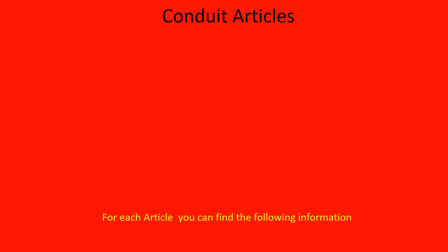For each one of these articles, you can find the following information. If that relevant article has a dot two section, it's going to be the definition of that type of conduit or raceway. If it has a dot 10 section, it's going to have the uses permitted — where can you install this conduit and what can you do with it. If it has a dot 12 section, it's going to have the uses not permitted. Also, if it has a dot 30 section, it's going to be the securing and supporting. And if it has the dot 80 section, it would be for ampacity — that only applies if your raceway has pre-built cables inside of it, which is the case for a couple of raceways we'll talk about today.